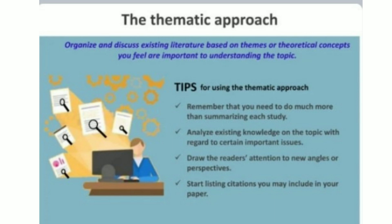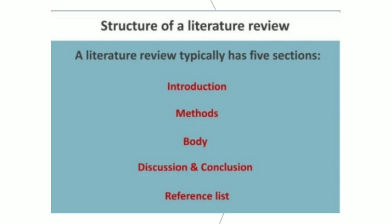You cannot add your own ideas, but you can write existing ideas in your own words, with citations included in your paper. A literature review typically has five sections: introduction, methods, body, discussion, and conclusion. At the end there will be a reference list, so you have to provide references for everything you mention in your research article.